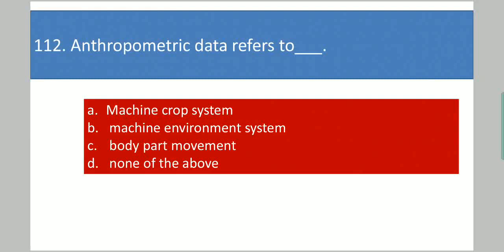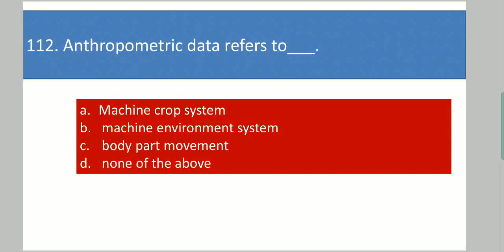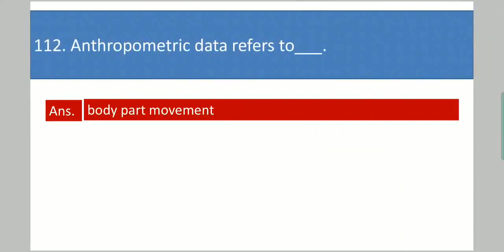Next question: Anthropometric data refers to dash. Your options are: machine crop system, machine environment system, body part movement, or none of these. Your answer is body part movement.